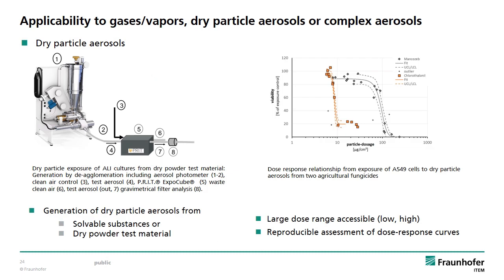Under these exposure conditions, a large range of dosages can be realized, leading to dose-response curves as depicted on the right side of the slide. In this case, two fungicides were tested and two clearly distinct toxic potentials were documented by the assay. This is in good agreement with the in vivo data as we will see later on.